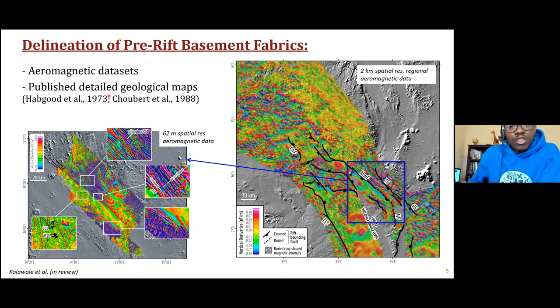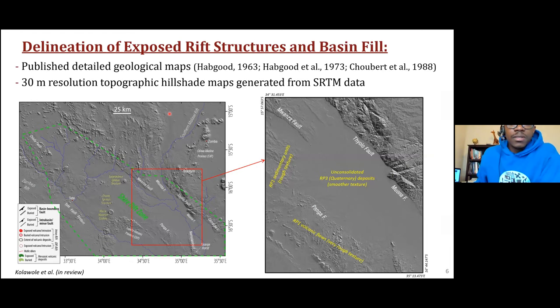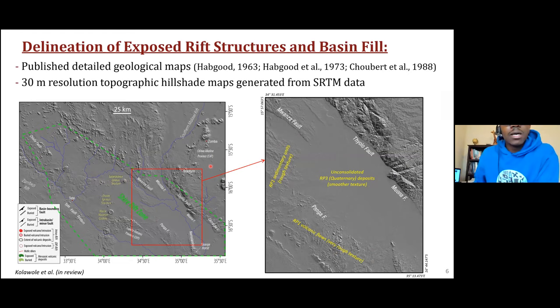In order to better constrain the trends of fabrics seen in aeromagnetic data, we also obtained measurements of basement foliation from previously published maps and field measurements in the area. We used published geological maps and topographic hill shade maps to delineate fault escarpments — you can see fault escarpments and even older rift-phase fault escarpments. We used hill shade maps to delineate those and integrated our interpretations with previous publications from geologic maps covering different parts of the basin.